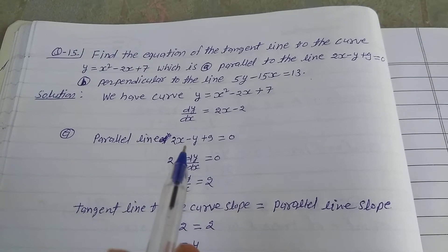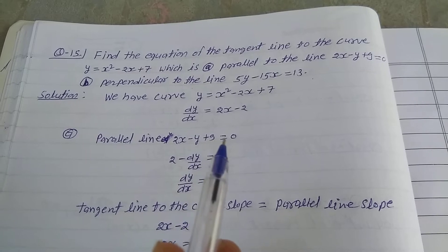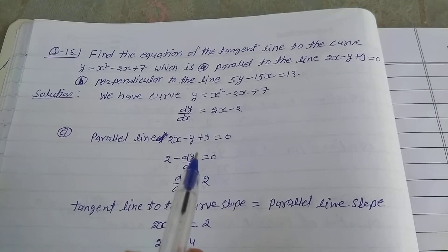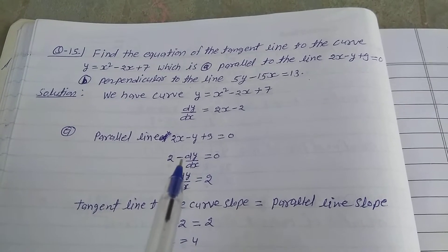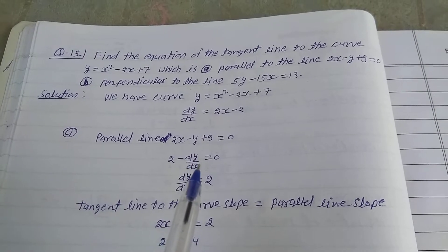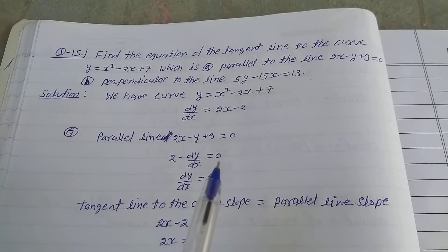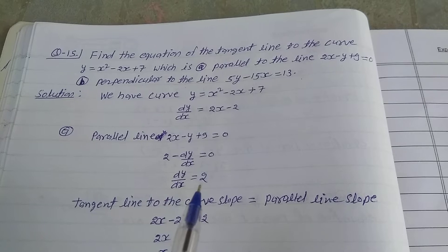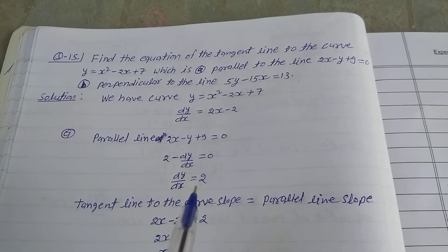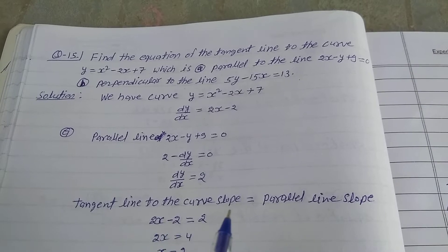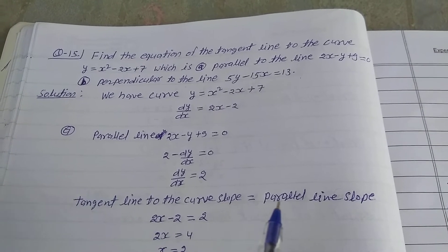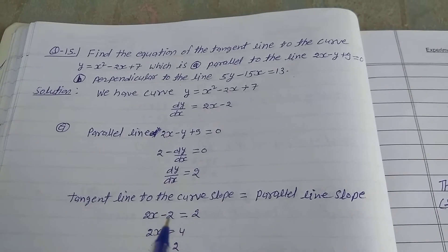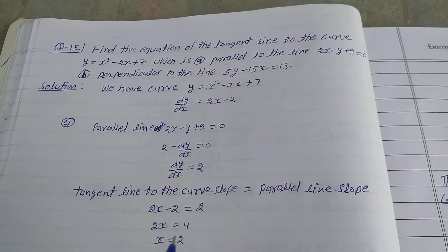For part (a), the given parallel line is 2x - y + 9 = 0. To find the slope of this line, differentiate with respect to x: 2 - dy/dx = 0, so dy/dx = 2. The parallel line slope is 2. Since the tangent is parallel to the line, the tangent slope equals the line slope: 2x - 2 = 2.